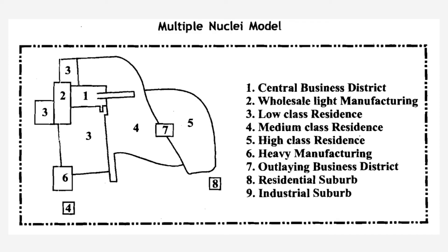There are multiple nuclei — main centers — around which the other sections are formed. These include light manufacturing, low-class residence, medium-class residence, high-class residence, residential suburb, and industrial suburb. All those zones are based on that particular nuclei or CBD.